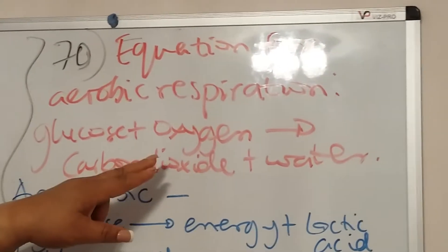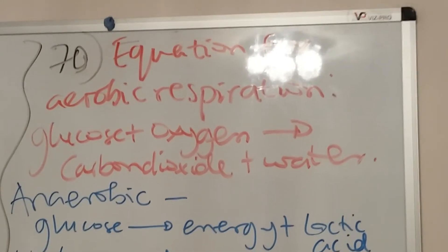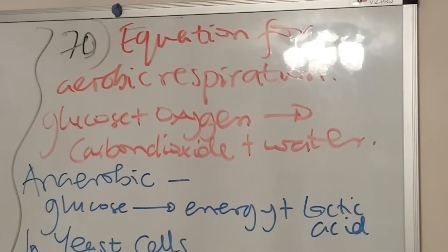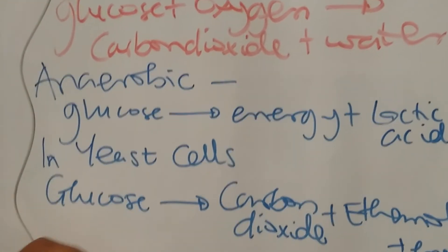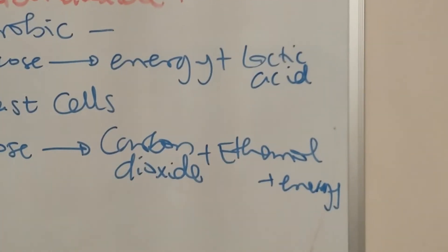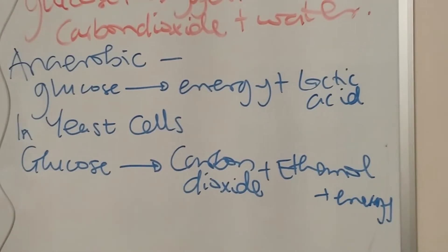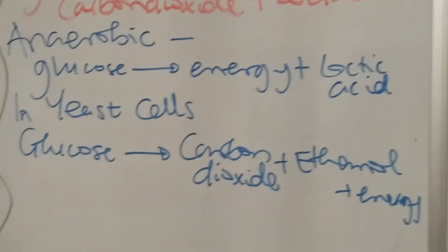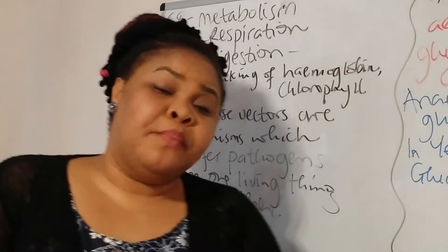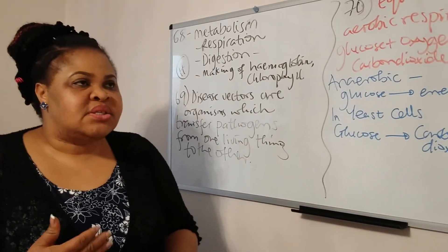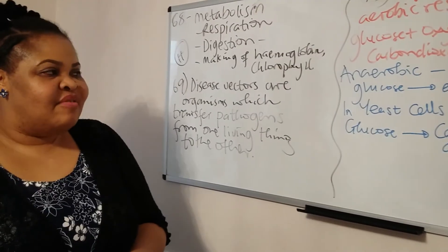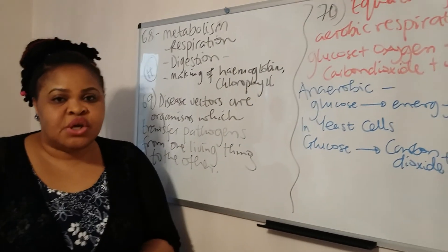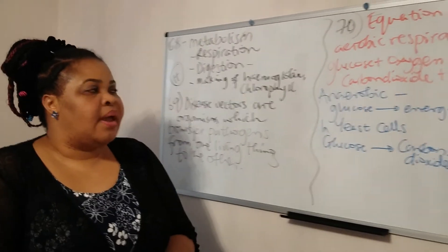Question 70: the equation for aerobic respiration is glucose plus oxygen producing carbon dioxide and water — the opposite of the photosynthesis equation. Anaerobic respiration in human cells is glucose producing energy and lactic acid. In yeast cells, anaerobic respiration produces carbon dioxide and ethanol. In anaerobic respiration very little energy is produced, but it is still important because when cells are working harder during exercise they need to keep breaking down glucose and releasing energy.